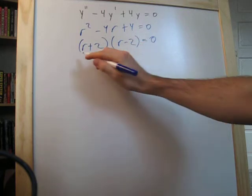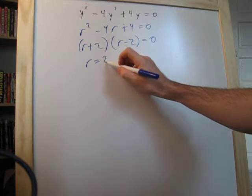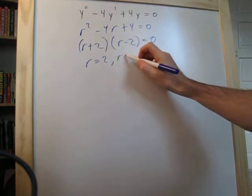Okay, so now, like we learned back in algebra, this means that r is equal to 2, and it's also equal to negative 2.